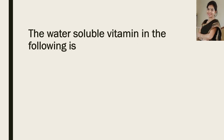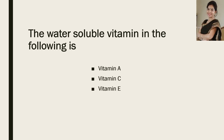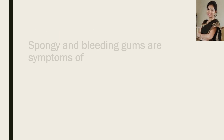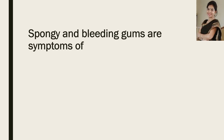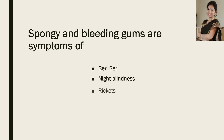Now the next question: the water-soluble vitamin in the following is? Vitamin A, vitamin C, vitamin E, or none of the above? And the correct answer is vitamin C. Now the next question: spongy and bleeding gums are symptoms of which disease? Beriberi, night blindness, rickets, or scurvy? And the correct answer is scurvy.